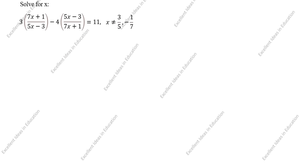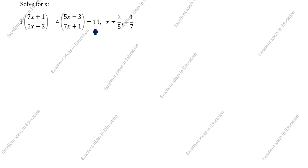Hi students, welcome to my channel, Excellent Ideas in Education. Today we are going to solve this problem: solve for x, 3 times open bracket (7x + 1)/(5x - 3) close bracket minus 4 times open bracket (5x - 3)/(7x + 1) close bracket equals 11.